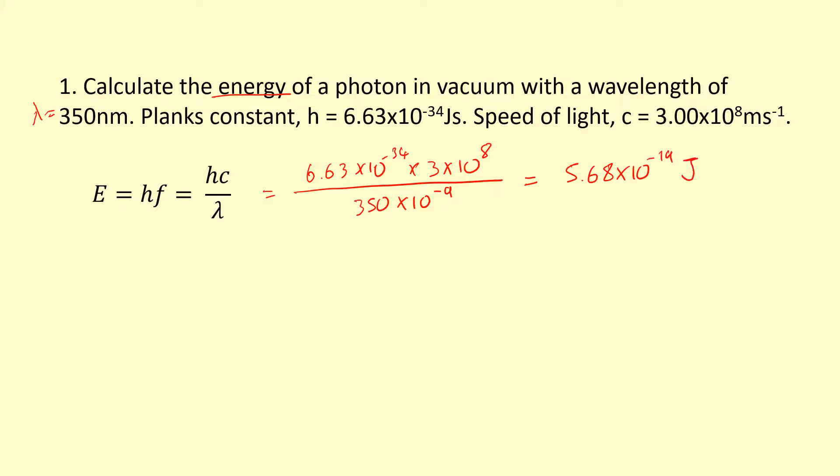There's a very small amount of energy there in joules. It's probably better to turn that into electron volts. So I'm going to divide that by 1.6 times 10 to the power of minus 19 to turn it into electron volts. And that gives me 3.55 electron volts. It's a bit easier to work with.